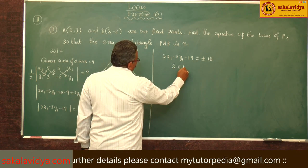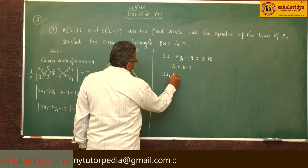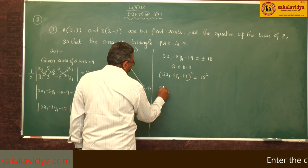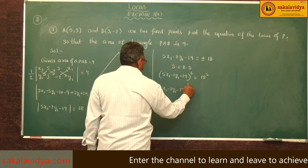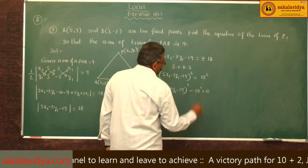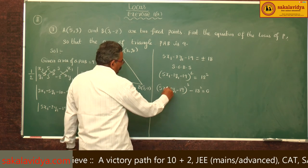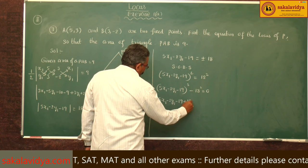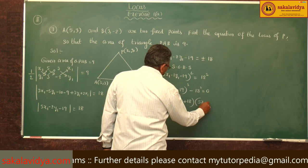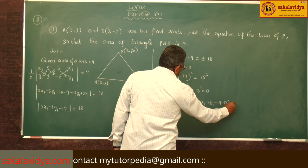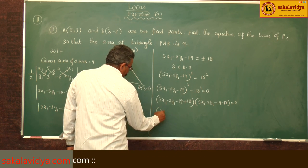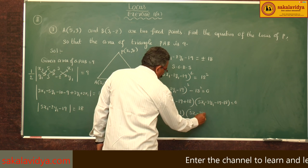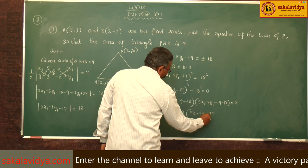Squaring on both sides: (5·x1 - 2·y1 - 19)² = 18². So (5·x1 - 2·y1 - 19)² - 324 = 0. This is of the form a² - b², so factoring as (a+b)(a-b): (5·x1 - 2·y1 - 19 + 18)(5·x1 - 2·y1 - 19 - 18) = 0, giving (5·x1 - 2·y1 - 1)(5·x1 - 2·y1 - 37) = 0.